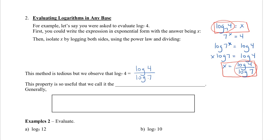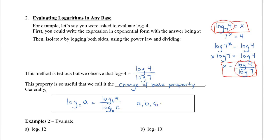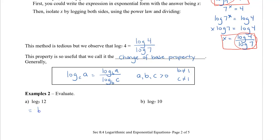This property is called the change of base property. Generally, log base C of A equals log A divided by log B, where B is any convenient base — base 10 being the most common — and A, B, and C must all be greater than 0, with B and C not equal to 1. For example, log base 5 of 12 would be typed as log 12 divided by log 5, giving approximately 1.54.